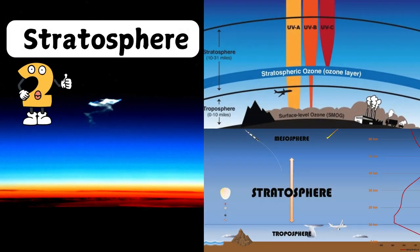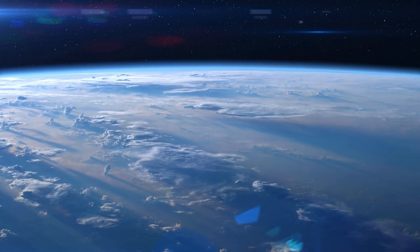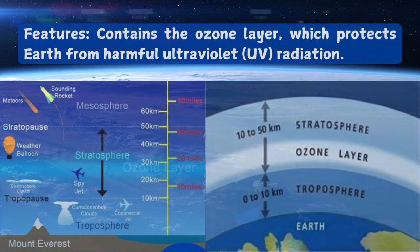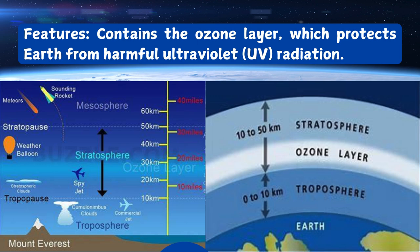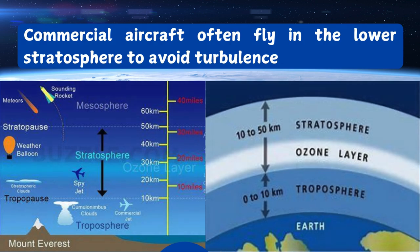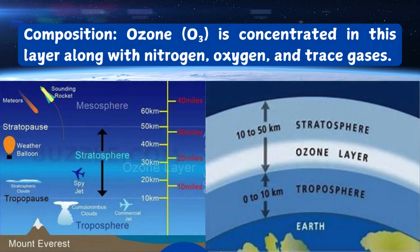Number two: Stratosphere. Location: extends from 15 kilometers to about 50 kilometers above the Earth's surface. Temperature increases with altitude due to the absorption of UV radiation by the ozone layer. Features: contains the ozone layer, which protects Earth from harmful ultraviolet (UV) radiation. Commercial aircraft often fly in the lower stratosphere to avoid turbulence. Composition: ozone (O3) is concentrated in this layer, along with nitrogen, oxygen, and trace gases.